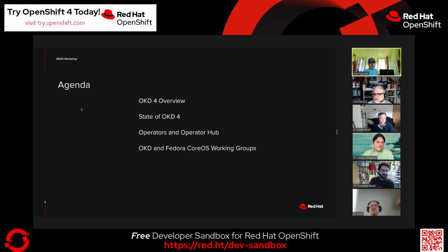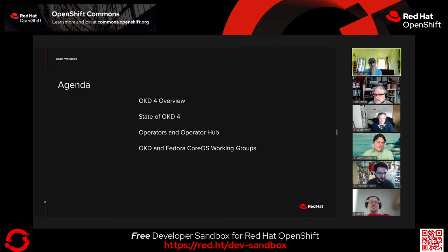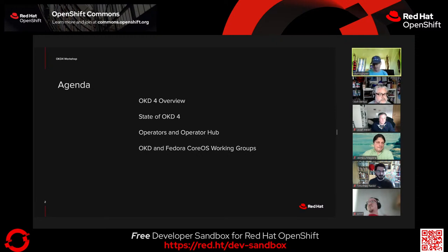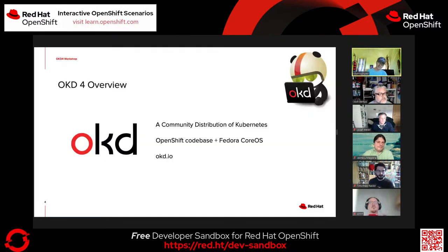So what is OKD? We're going to give a quick overview and update on current state. We'll talk a bit about what differentiates OKD and OpenShift from other Kubernetes distributions. OKD is a community distribution of Kubernetes — it is 100% Kubernetes. This is not a fork; this is all Kubernetes. That's a question we get from time to time.